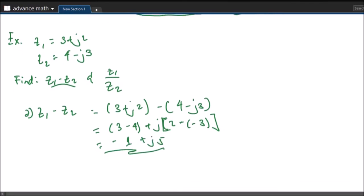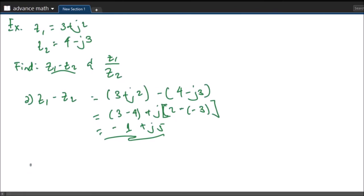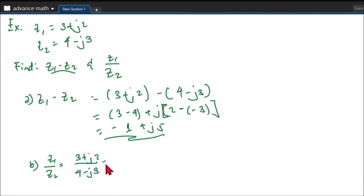Now for the division, so we will have Z1 over Z2 equals 3 plus J2 over 4 minus J3. So we will use the conjugate. So we have 4 plus J3 over 4 plus J3.